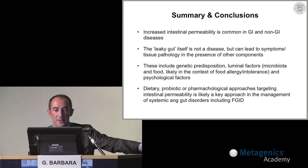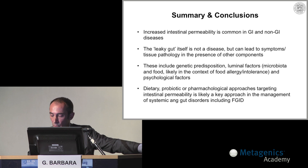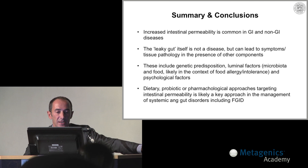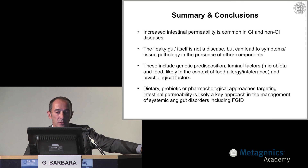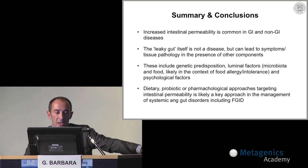To wrap up and conclude: increased intestinal permeability is very common, both in GI and non-GI diseases. The leaky gut itself is not a disease, but can lead to symptoms and tissue pathology in the presence of other components, which can be a genetic predisposition, luminal factors, and other factors such as the microbiota and stress. Dietary, probiotic, and pharmacological approaches targeting intestinal permeability represent a key approach in the management of systemic and gut disorders, including IBS.